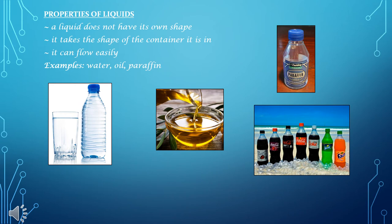What are liquids like? Let us have a look at the properties of liquids. A liquid does not have its own shape. A liquid takes the shape of the container that it is in. A liquid can flow easily. Have a look at the picture of the water in the glass and the water in the bottle. The water in the glass has taken the shape of the glass, and the water in the bottle has taken the shape of the bottle. Can you see the oil being poured into the bowl? This is what we mean when we say that liquids flow easily — they can be poured into something and poured out of something.